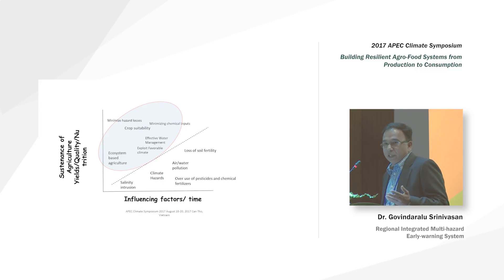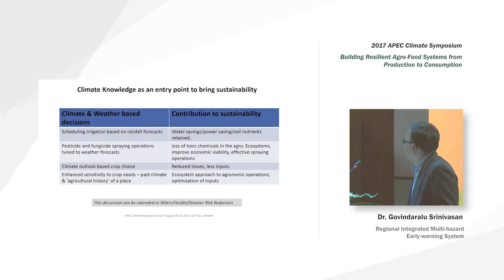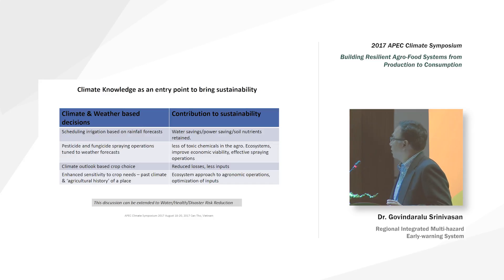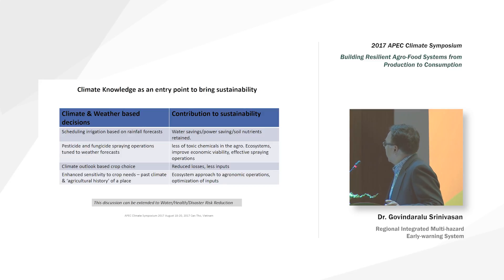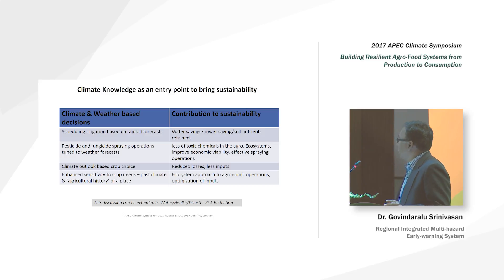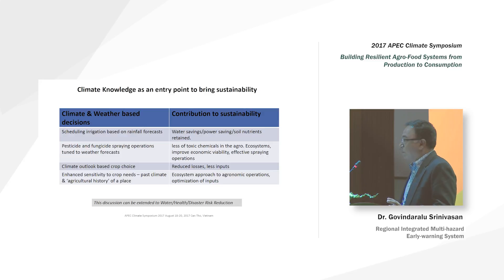All of these could benefit from climate information. For example, scheduling irrigation based on rainfall forecasts can lead to water savings, power savings, and retained soil nutrients — many benefits that contribute to sustaining and building resilience. Similarly, using weather forecasts for effective spraying operations leads to fewer toxic chemicals in the system and better economic viability.